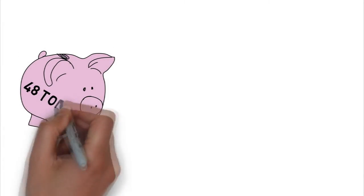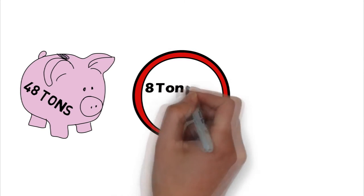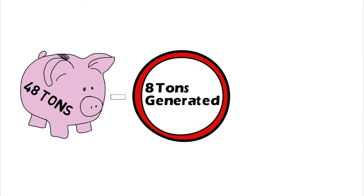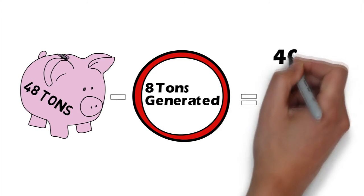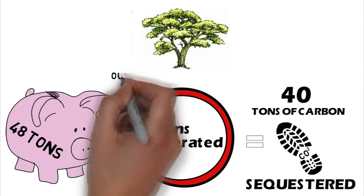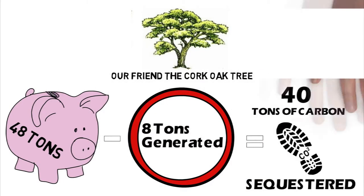Now let's check back in on our little piggy bank. We have 48 tons of carbon sequestered. Now take away the 8 tons of carbon generated by the entire production process, and we have a total of 40 tons of carbon that was absorbed and stored by our friend the cork oak tree. Do you see why carbon negative is so important now? Just imagine if everything we made, bought, and sold was carbon negative.